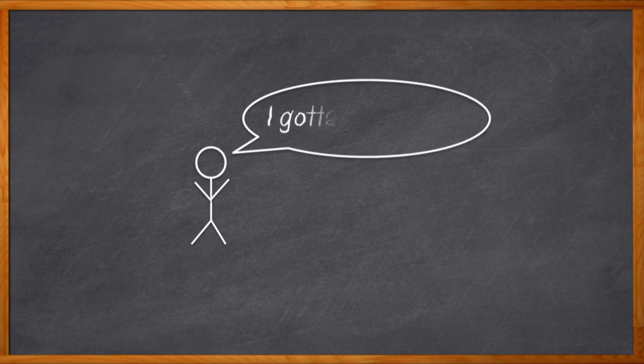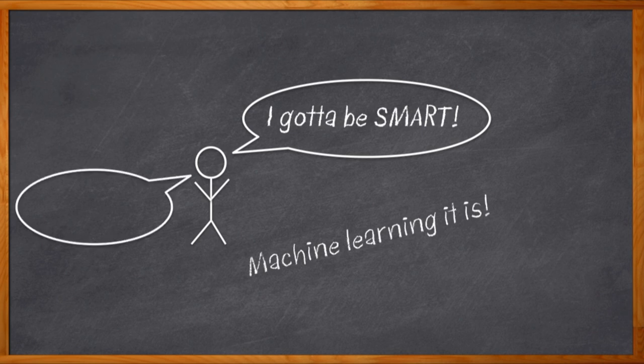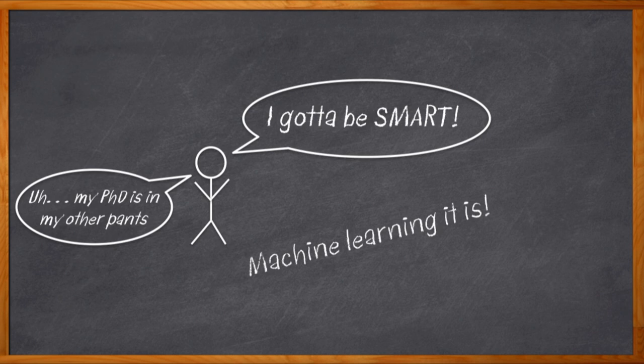Everything these days needs to be smart — no one wants a dumb just about anything anymore. But in order to get the smarts into our IoT edge devices we need machine learning, and machine learning is hard to implement. Not everyone has a PhD in ML, so we're stuck, right? Actually no — even your average embedded engineer can get started with a machine learning design today that is easy to implement and accurate.